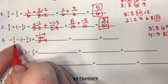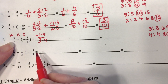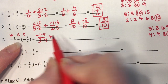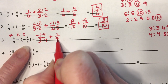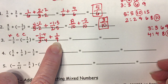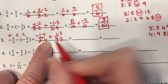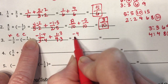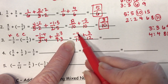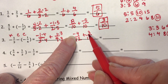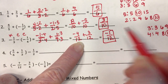Because this is subtraction, I'm going to rewrite it as addition using keep-change-change: keep the first term negative, change subtraction to addition, and change negative one-fourth to positive one-fourth. I still have to change the denominator to twelve: what times four is twelve? Times three. Multiply the top by three as well. Rewriting: negative one times four is negative four over twelve, and one times three is three over twelve. Negative four plus three — different signs, so I subtract: one, and there are more negatives, so the answer is negative one-twelfth, which doesn't simplify.